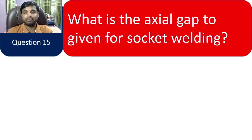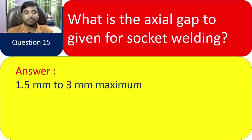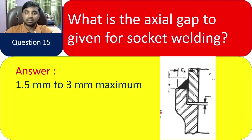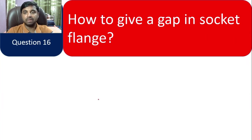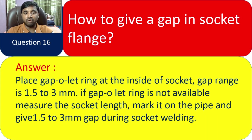Question 15: What is the axial gap given for socket welding? The gap is 1.5 to 3 mm maximum — this is called the expansion gap. Question 16: How do you give a gap in a socket flange? Place a gap washer ring at the inside of the socket; the gap range is 1.5 to 3 mm. If a gap washer ring is not available, measure the socket length, mark it on the pipe, and ensure the 1.5 to 3 mm gap before starting the welding.